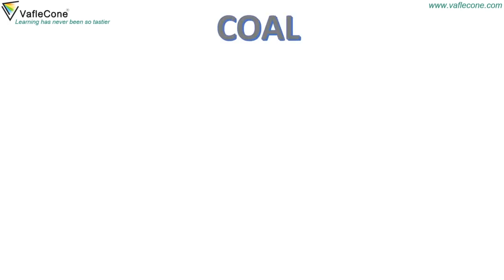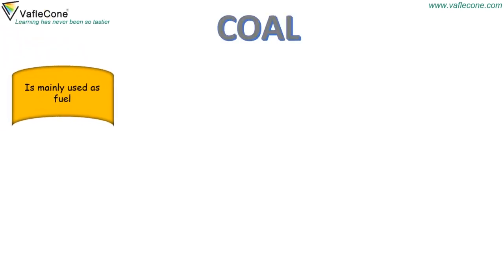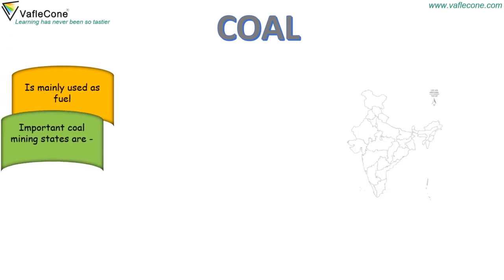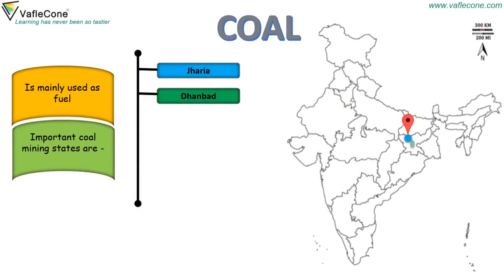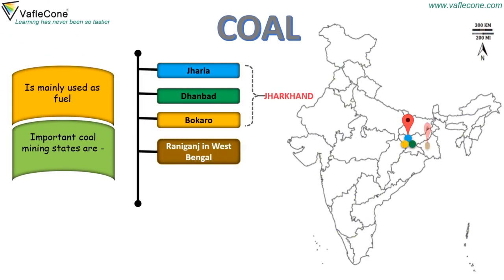Coal. Coal is mainly used as fuel. Important coal mining centers are Jharia, Dhanbad, and Bokaro in Jharkhand, Raniganj in West Bengal, and Korba in Chhattisgarh.